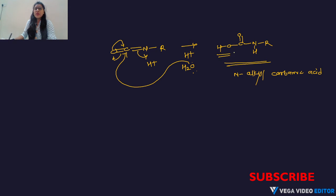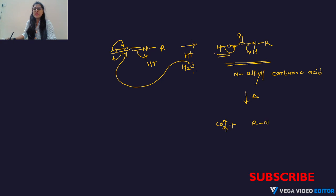The alkyl carbamic acid (R–NH–COOH) undergoes decarboxylation under heating conditions. The bond breaks, CO₂ is evolved as a byproduct, and the primary amine (R–NH₂) is obtained as the final product.